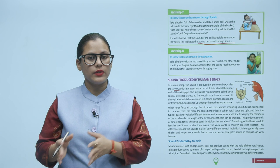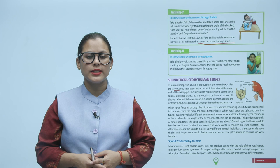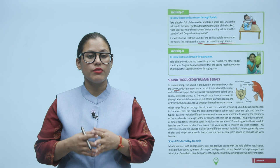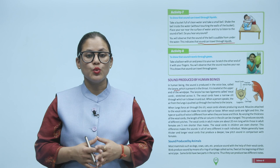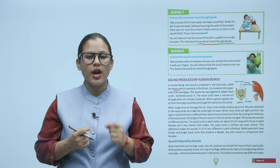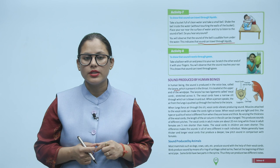Sound produced by animals. Most mammals such as dogs, cows, cats, etc. produce sound with the help of their vocal cords. Birds produce sound by means of a ring of cartilage called the syrinx, fixed at the beginning of their windpipe. Some birds have two parts in the syrinx — thus they can produce two different notes.